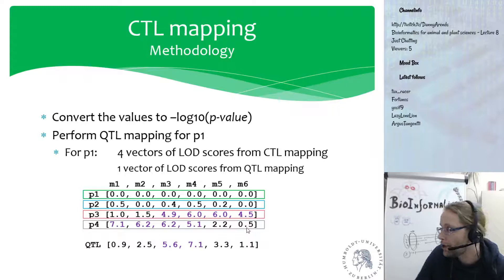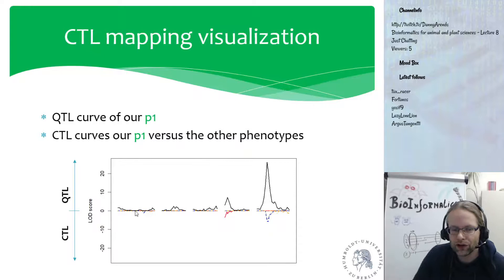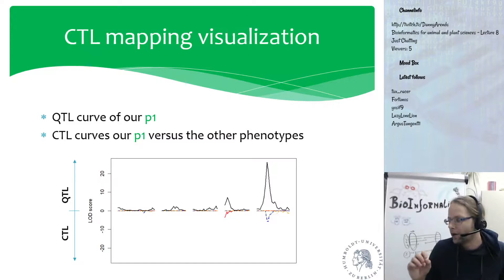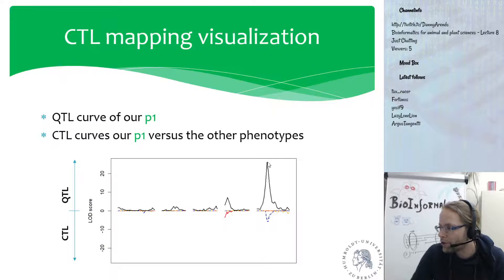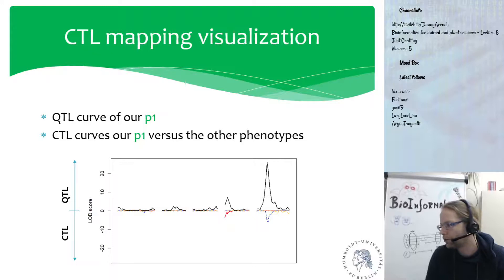CTL mapping is very similar to QTL mapping, but instead of taking one phenotype you take a pair or multiple phenotypes. In CTL mapping, your output is not just a single QTL profile but also a correlation profile for your selected phenotype versus all other phenotypes in your dataset. This gives you additional information because if your phenotype of interest does not show any variance, the QTL profile would be flat, but the CTL profile might show regions of the genome where correlation is lost between your phenotype of interest and some other phenotypes — regions not visible using standard QTL mapping.